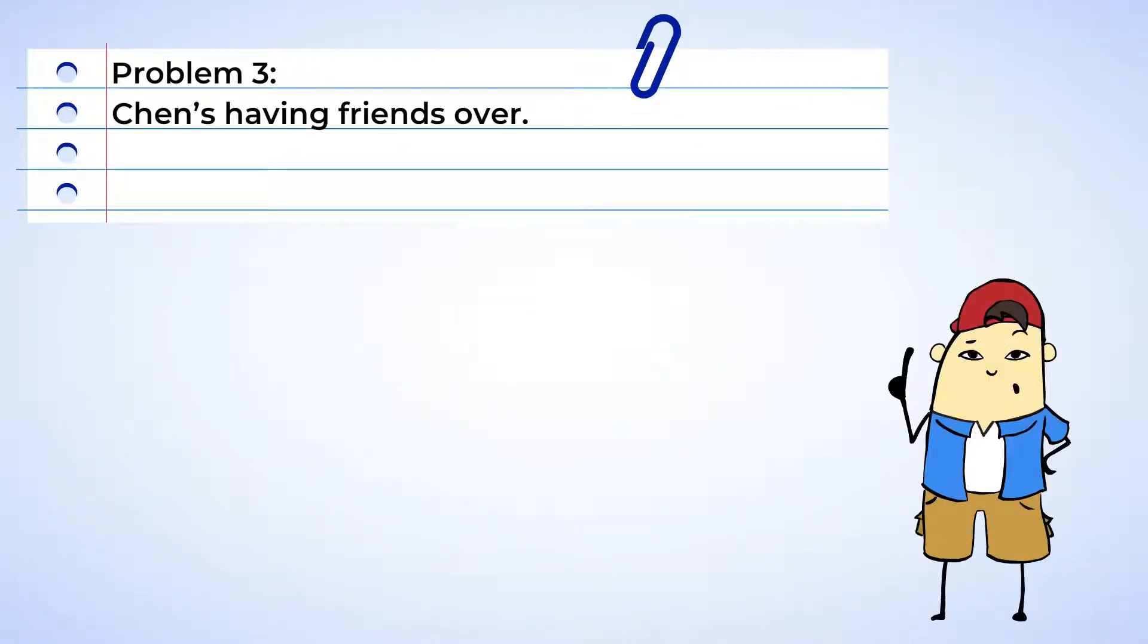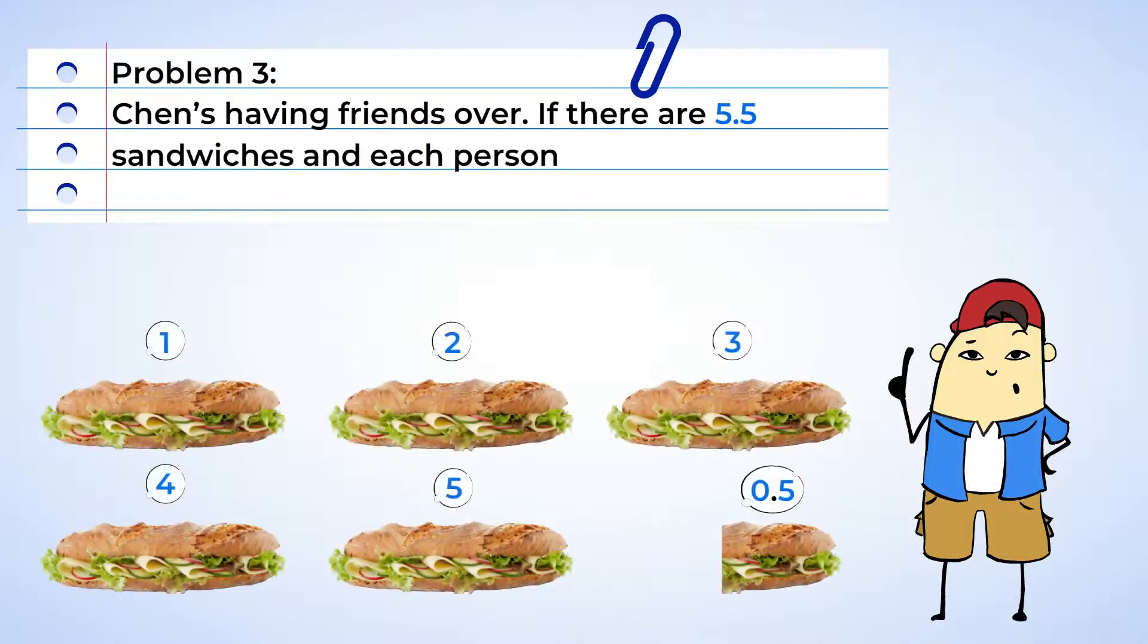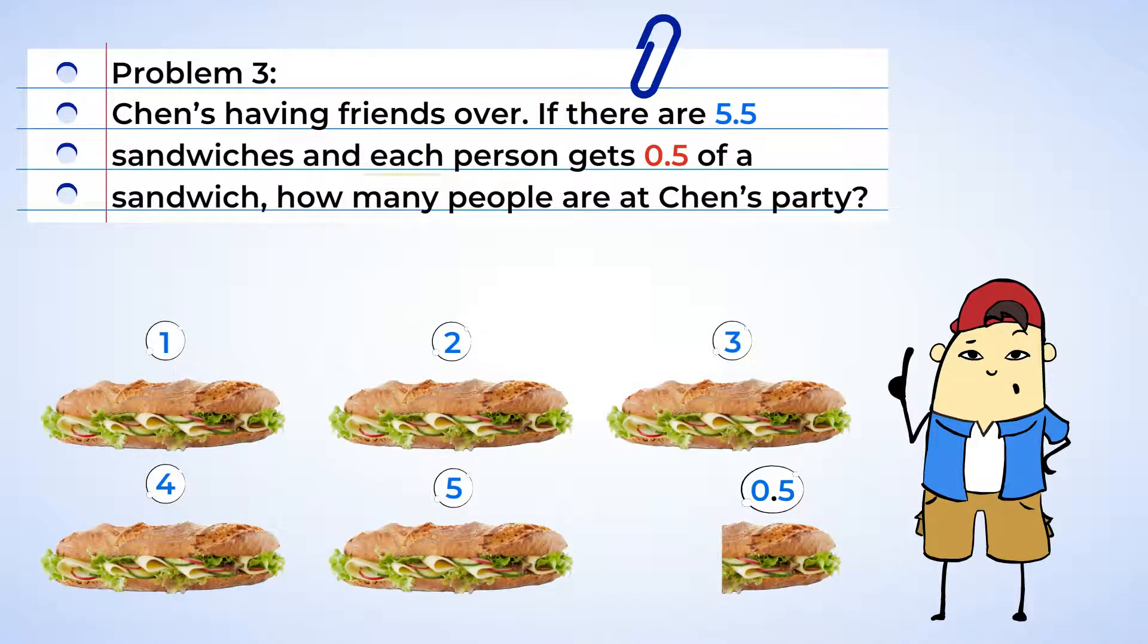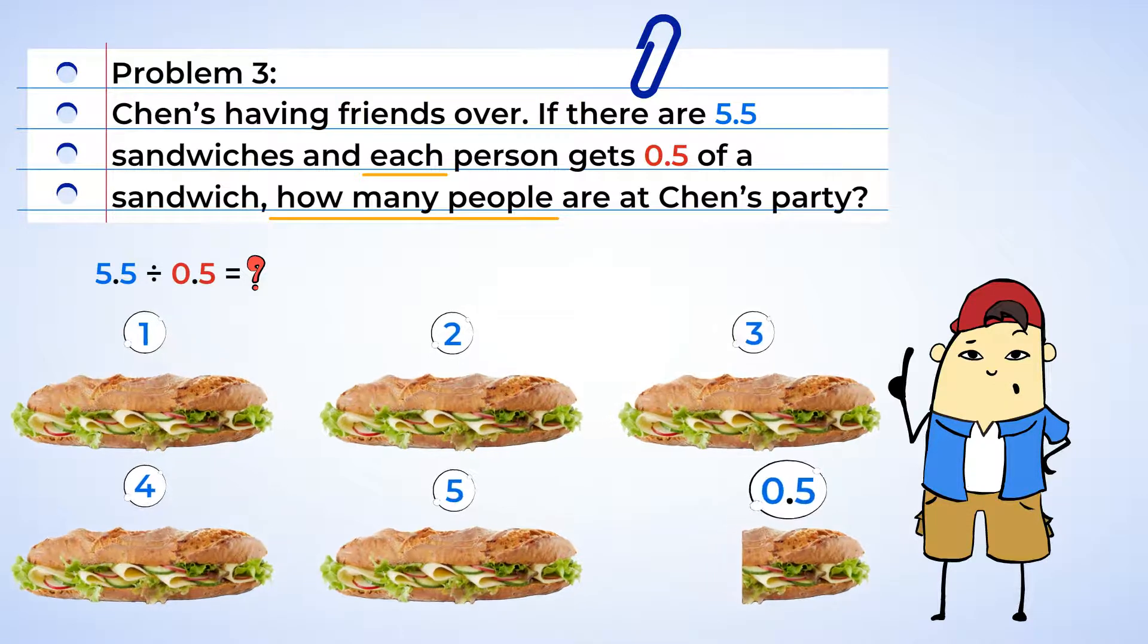Chen is having friends over. And we're invited. If there are five and a half sandwiches, and we know that each person gets a half of a sandwich, how many people are there at Chen's? Now, we're very hungry, so let's make a model and try to solve this faster, so we can eat those sandwiches.